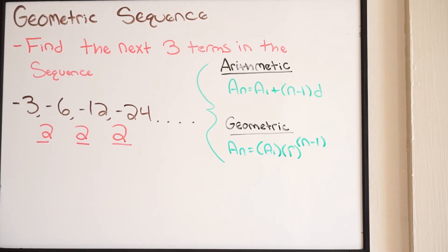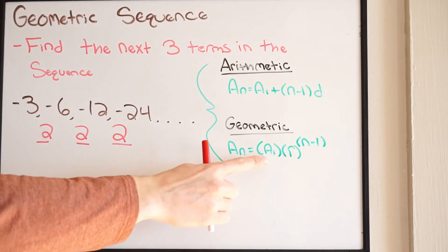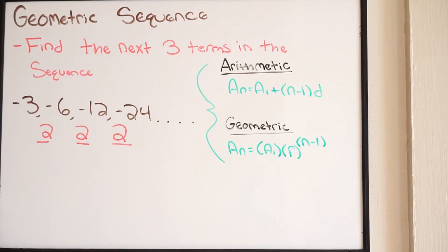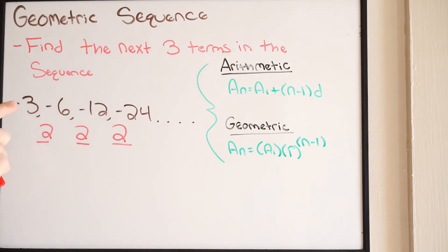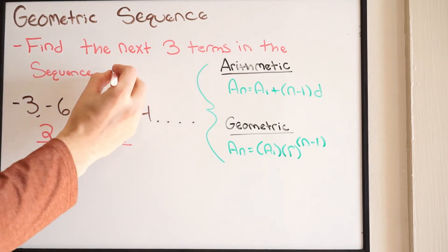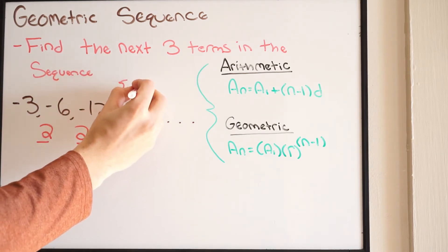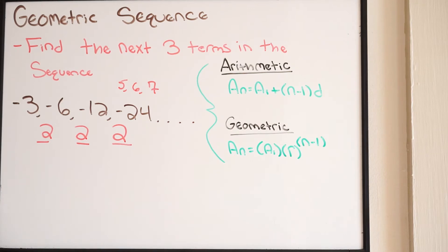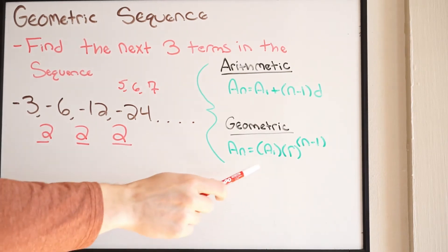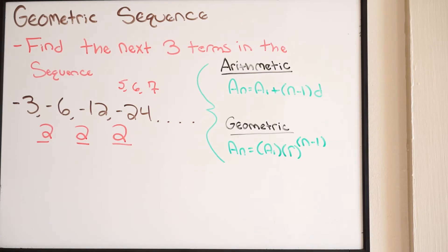The equation is very similar to arithmetic. A of 1 is your first term in the sequence. R, which we just went over, is your common ratio. And N is the number of the term in the sequence. So very similar to arithmetic, except now you have this common ratio. We have the first, second, third, fourth terms — and we want to find the fifth, sixth, and seventh terms. We're going to do that by using this equation.